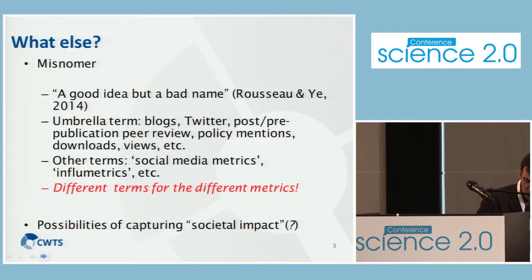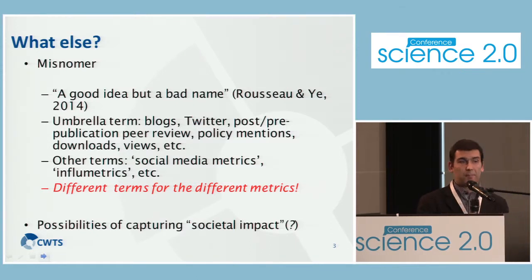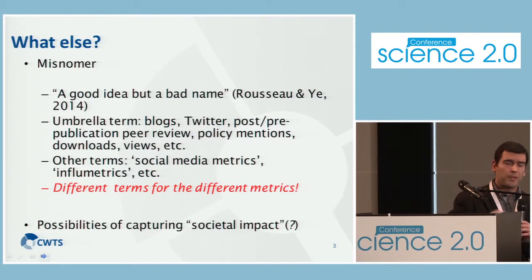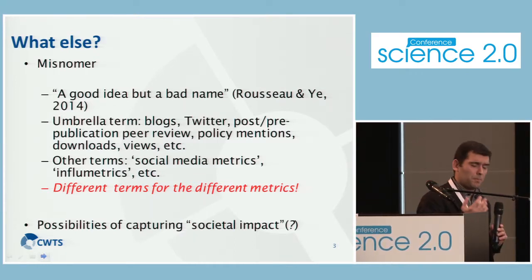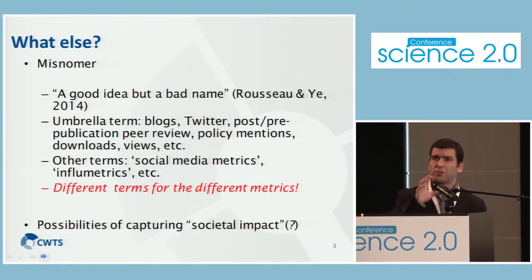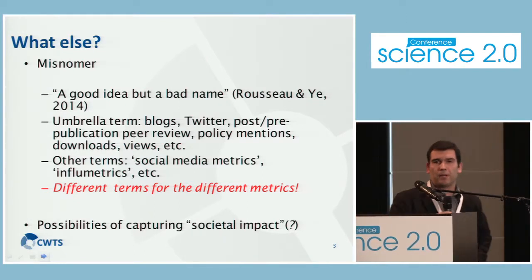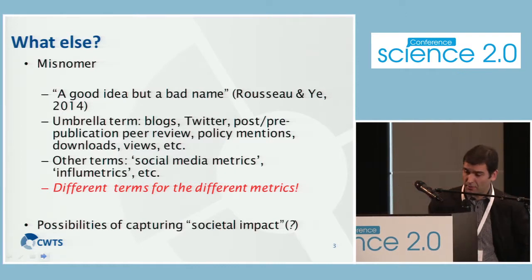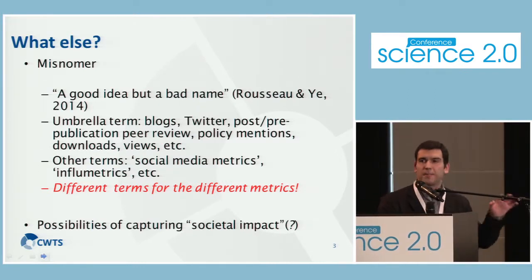Altmetrics is considered a bad term by some colleagues — a good idea but a bad name — because it's an umbrella term that refers to many different things: blogs, tweets, pre- and post-reviews, policy mentions, downloads and views. That's why other terms have emerged, like social media metrics or inflometrics.